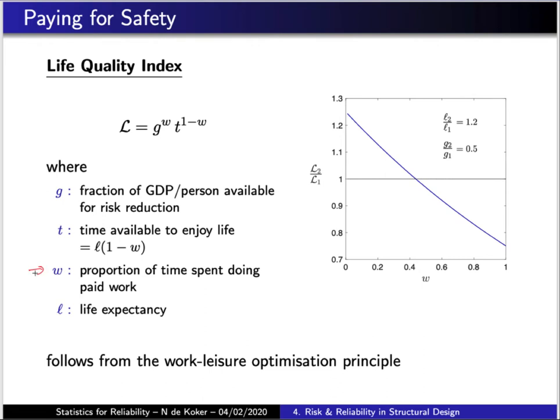Also, every society has a life expectancy, so there is some proportion of your total life which you spend in leisure. And given a level of economic activity in the country, the economy has a gross domestic product, and society can spend some fraction of that gross domestic product specifically to reduce its exposure to hazards. That fraction we will denote as G. These parameters reflect a given society's choices in terms of how they live their life and how they apply their economic activity to improve their quality of life.